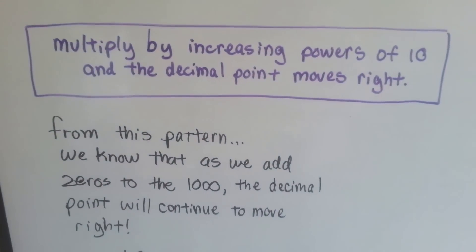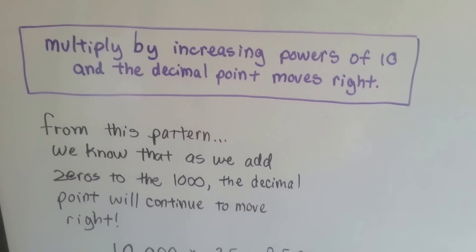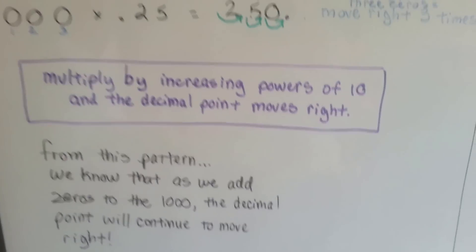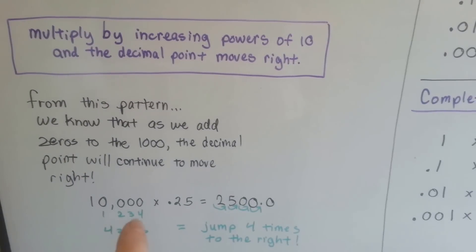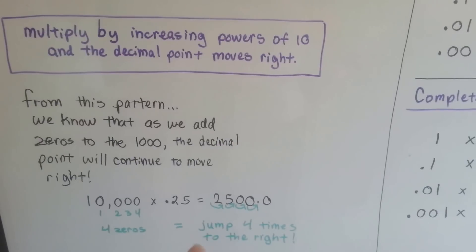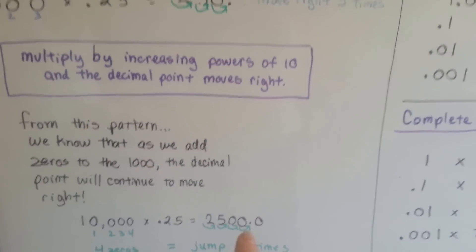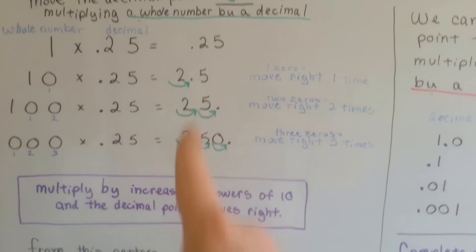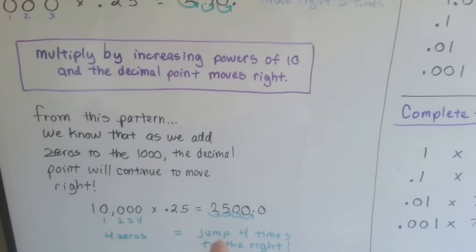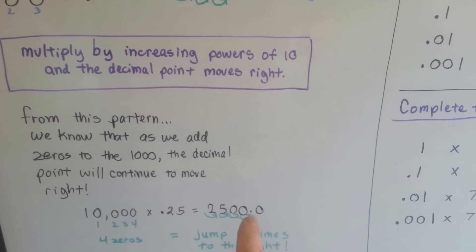From this pattern, we know that as we add zeros to the thousand, the decimal point will continue to move right. We were at a thousand. If we move to ten thousand, we now have four zeros, and it's going to jump four times to the right — one, two, three, four. We had to add zeros in order to move that decimal place over. Our twenty-five hundredths is now two thousand five hundred.